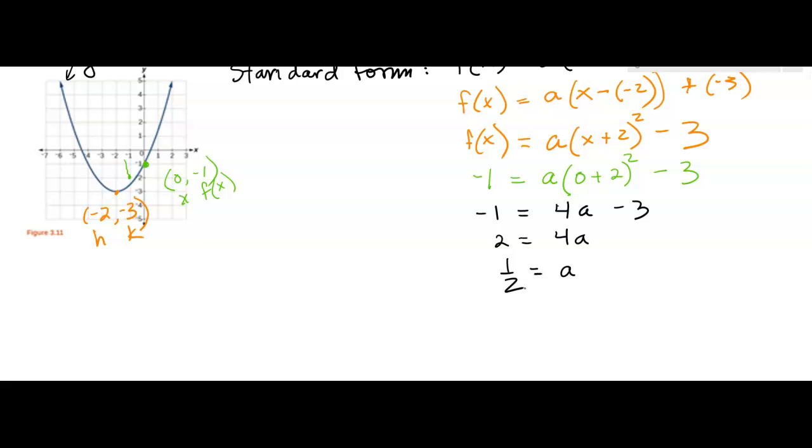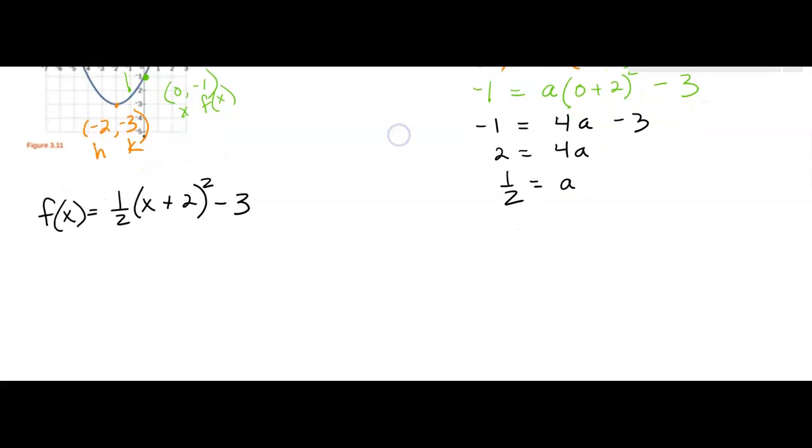So now in standard form, I'm going to go over here and write it. I have f(x) is equal to 1 half x plus 2 squared minus 3. So far so good. That's part of it. That's the equation in standard form.